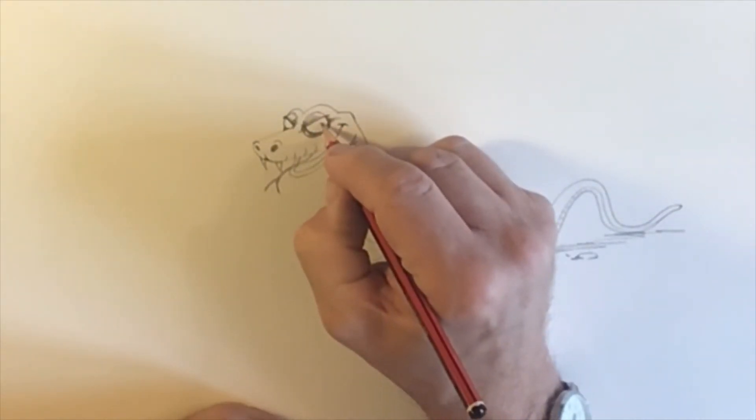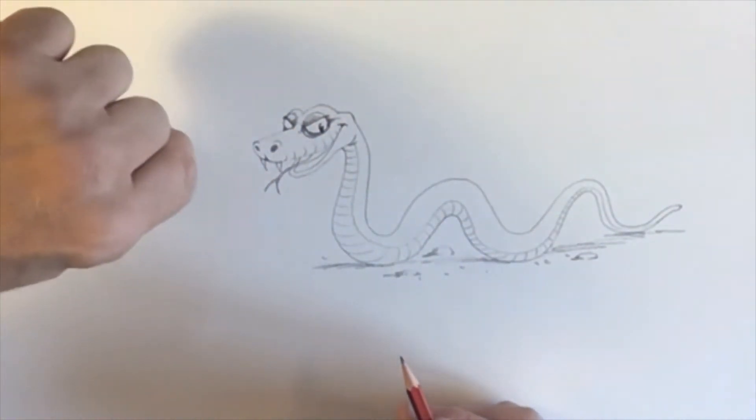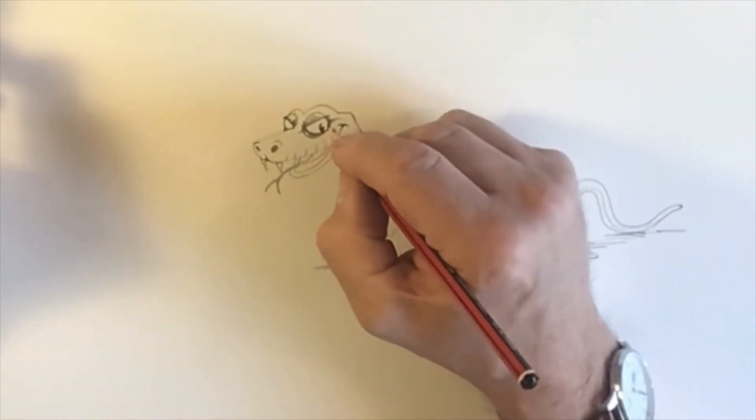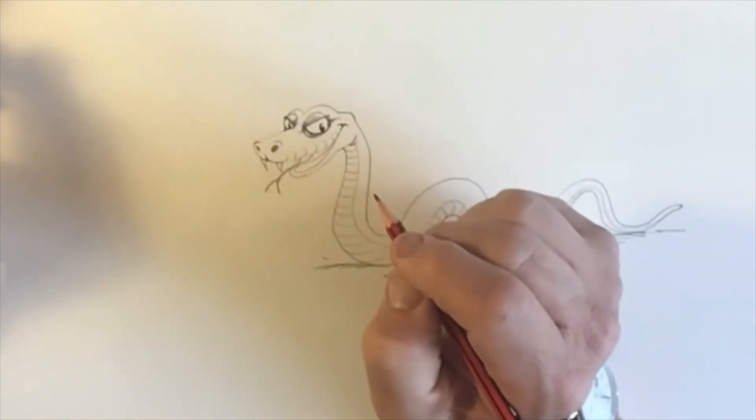And we'll have him looking sideways. And I've done his pupil like a sort of bean shape really. It's not a circle, they have quite slitty eyes. But I've left a little white bit there that I haven't coloured in, and that helps to make his eye look shiny. Same on that side.